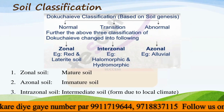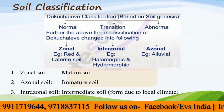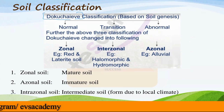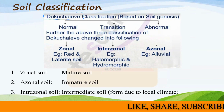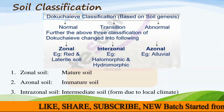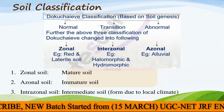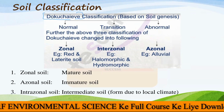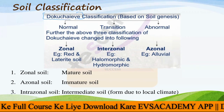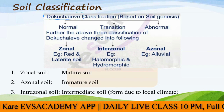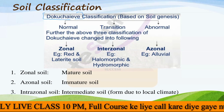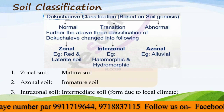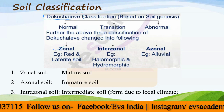Soil classification was given by Dokuchaev, also called the father of soil science. He classified soil based on soil genesis — how soil is created. This was an early classification; nowadays we use soil orders, families, and groups. Dokuchaev proposed three types: normal, transition, and abnormal soil development. These later evolved into new terms: normal became 'zonal,' transition became 'intrazonal,' and abnormal became 'azonal.'